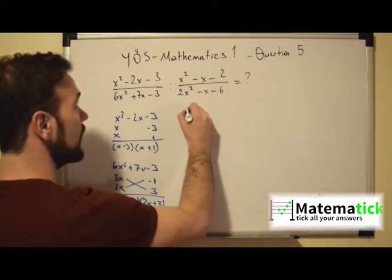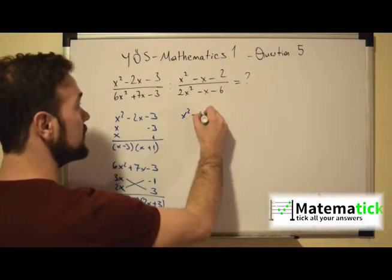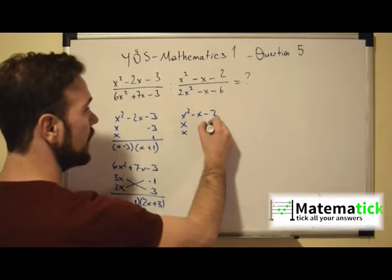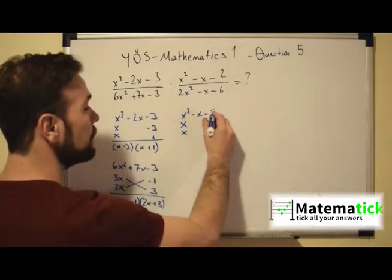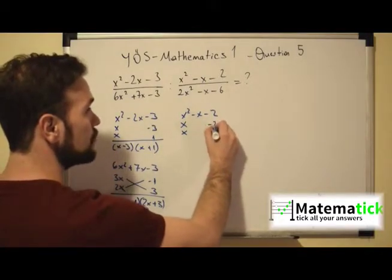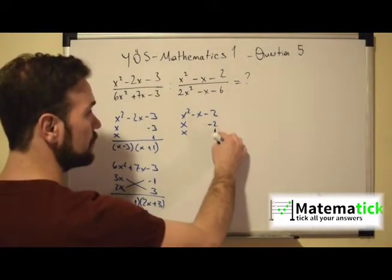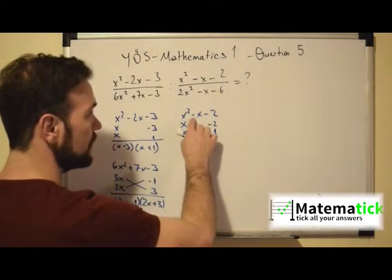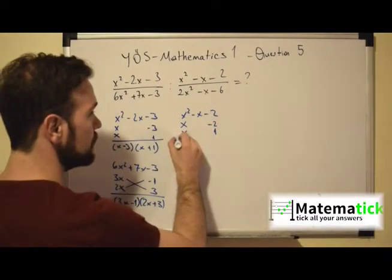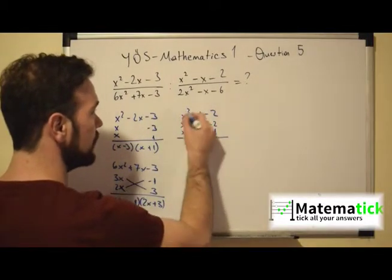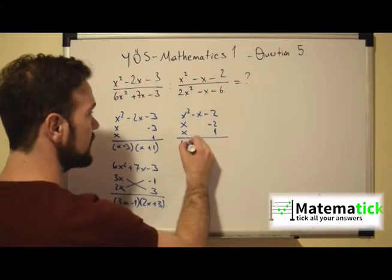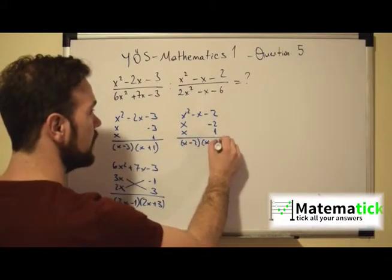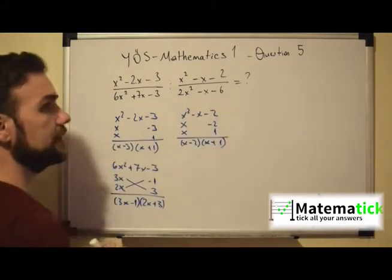Now let's look at the numerator of the second fraction: x² - x - 2. We have x times x, and -2 times 1 gives us -2. Then -2 plus 1 gives us -1. So another way of writing this expression is (x - 2)(x + 1).